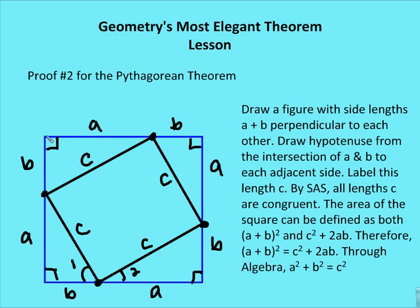The second proof involves drawing a square with side lengths A plus B, all perpendicular to each other. We then draw a line from each intersection of A and B on one side to the adjacent side, labeling that length C. We draw the hypotenuse from the intersection of A and B to each adjacent side, labeling each such length C. All four C lengths are congruent by side-angle-side, giving four congruent right triangles by SAS.